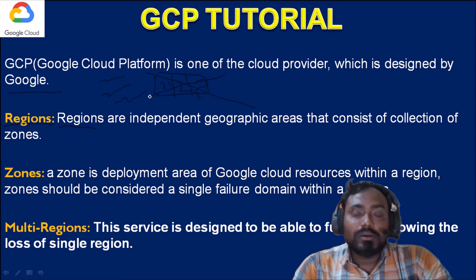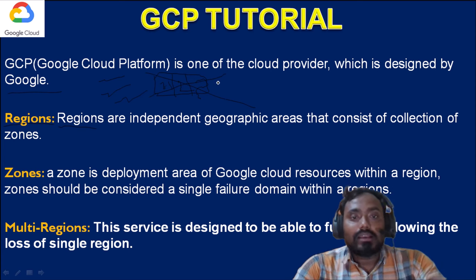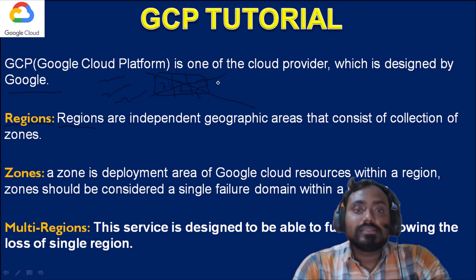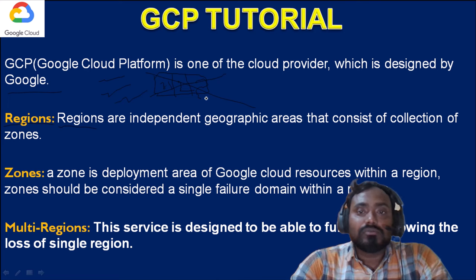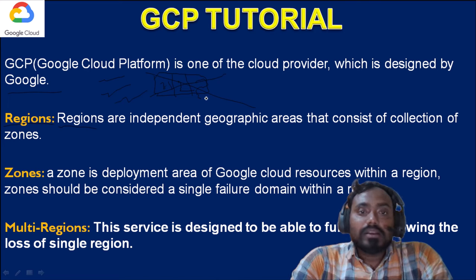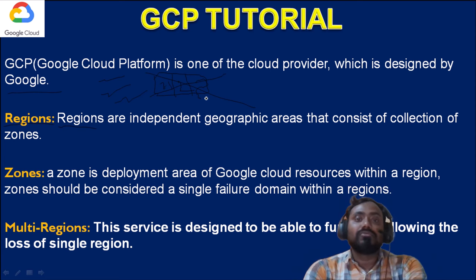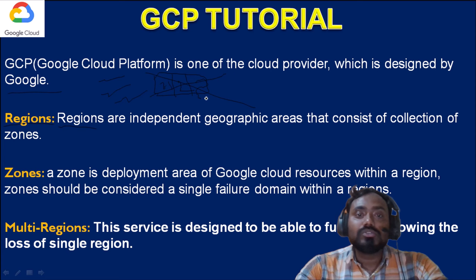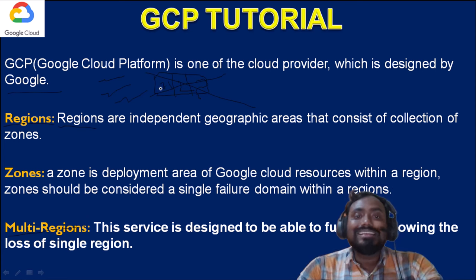In real time, such a scenario — a complete region going down — will rarely happen, because these data centers where data is stored are highly secured and their locations are not publicly known. However, if it does happen, we need a backup plan. On those scenarios, Google has proposed a third option: multi-region.